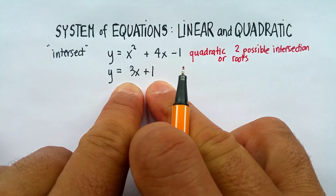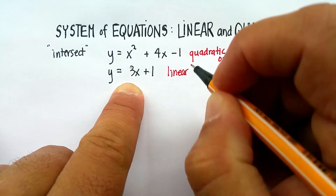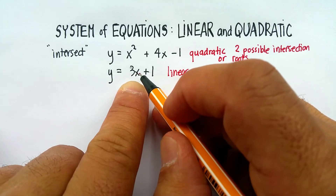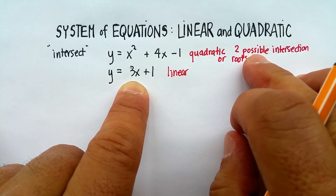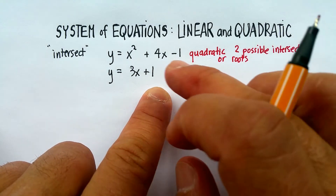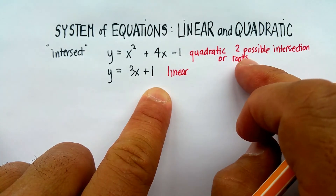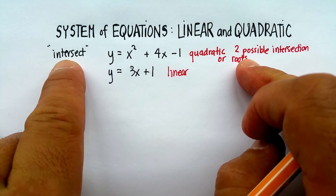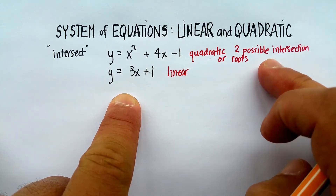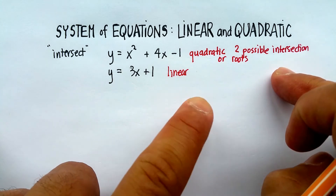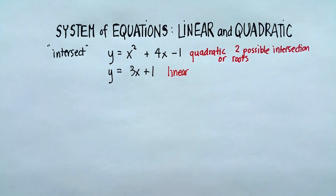The linear equation has a degree of one, because the highest exponent of the variable is one, so there's only one possible solution — but you always default to the one with the larger number. So this particular system has a possibility of two roots or two intersections. If you had a quadratic parabola and put a line through it, you can see that it might actually hit twice.